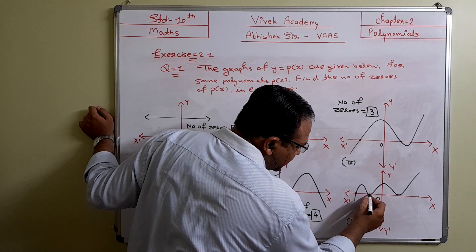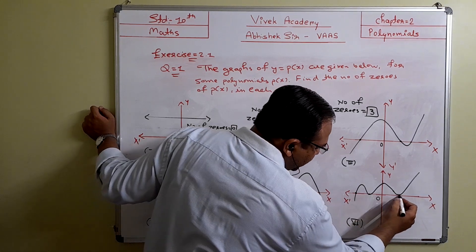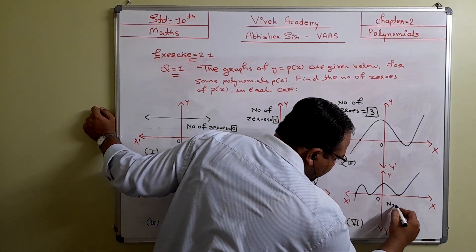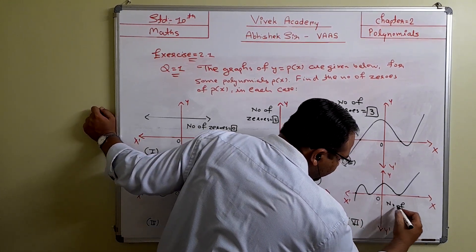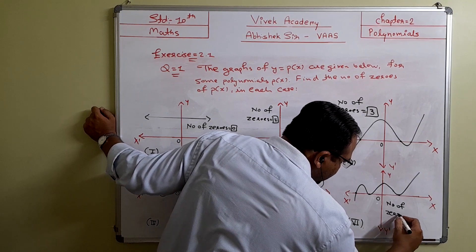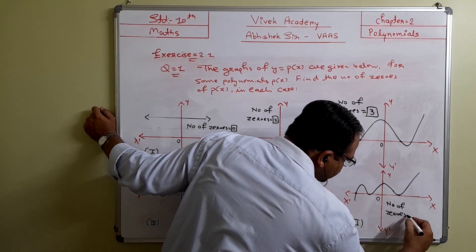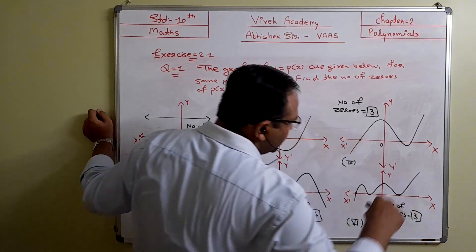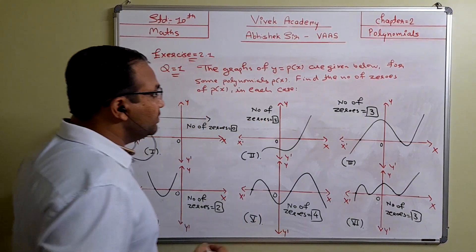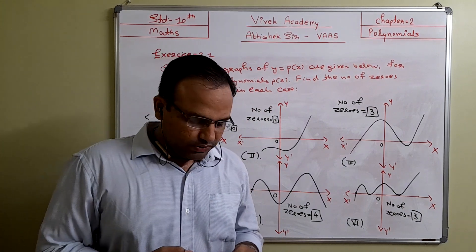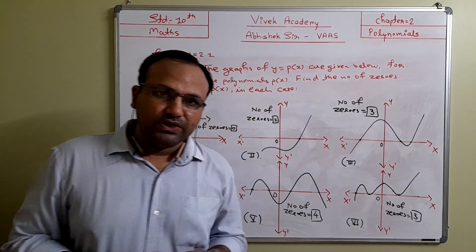In the last question, the graph is intersecting the x-axis at one, two, and three points, so the number of zeros is 3. That completes Question 1 of Exercise 2.1. Thank you.